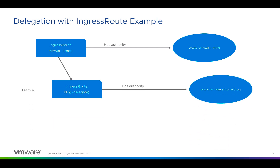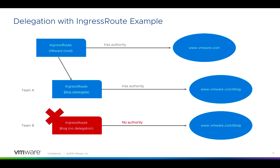In this example, team A has authority over vmr.com/blog. Now if team B comes along and creates an ingress route for the same vmr.com path, because that route has already been delegated to team A, it will be rejected. The concept of delegation also allows you to isolate secrets and TLS certificates to a specific namespace — so instead of copying your TLS certificates into team A's namespace, you can keep those certificates within an admin-controlled namespace for centralized management. Contour is designed to solve multi-team challenges to deliver more secure and more reliable service.